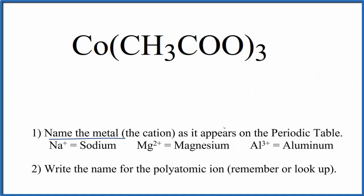So first, we write the name for the metal as it appears on the periodic table. Co, that's cobalt. Next, we write the name for the polyatomic ion.